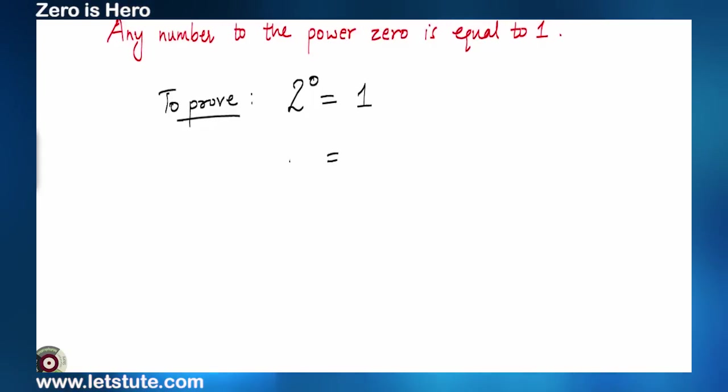And I can write 2 raised to 0 as 2 raised to 1 minus 1 because 1 minus 1 is 0. So, this will be equal to 2 raised to 1 multiplied by 2 raised to minus 1. And we know that 2 raised to minus 1 is equal to 1 upon 2. And therefore, we have got 2 raised to 0 is equal to 1.